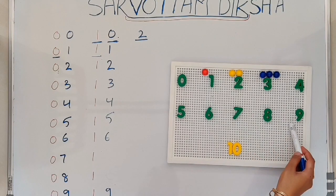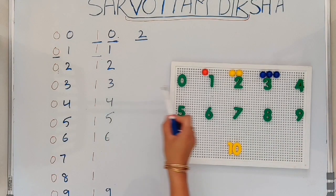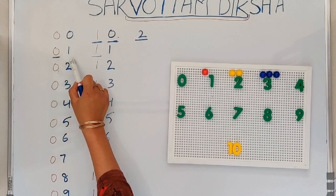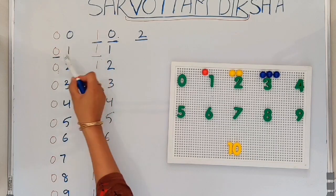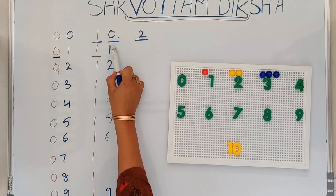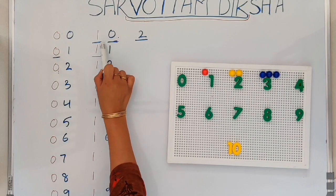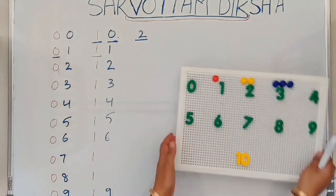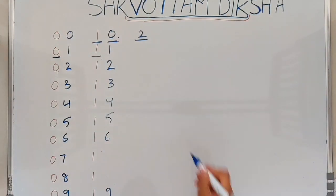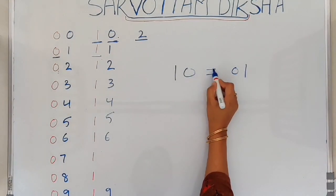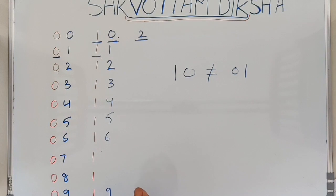They started counting again from the smallest number at the second place and kept going till nine. If you see, '01' means I have one at the first place and nothing at the second place. '10' means I have zero at the first place and one at the second place. '10' and '01' are made of the same digits but they are not at all equal.